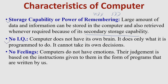The seventh characteristic is no IQ: a computer does not have its own brain. We have to program the computer to make it work. It does only what it is programmed to do — it cannot think beyond those instructions or take its own decisions. The eighth is no feelings: computers do not have any kind of emotions. Their judgment is based on the instructions given to them in the form of programs written by humans.